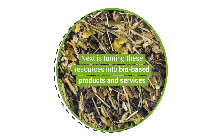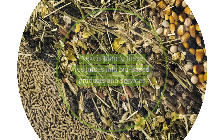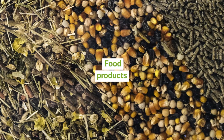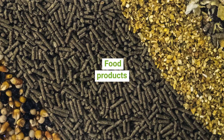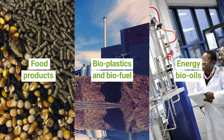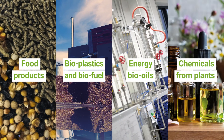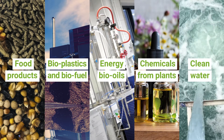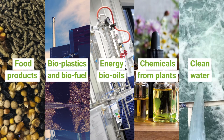Next is turning these resources into bio-based products and services. This could include food products for human or animal consumption, by-products from food production for plastics or fuel, energy via bio-oils, chemical products derived from plant sources, and algae or microbes to clean water supplies instead of chemicals.